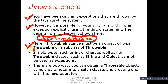The throwable instance must be an object of type Throwable or a subclass of Throwable. Simple types such as int or char, as well as non-throwable classes such as String and Object, cannot be used as exceptions — you have to take care of this. There are two ways to obtain a throwable object: using a parameter in a catch clause, or by creating one with the new operator.